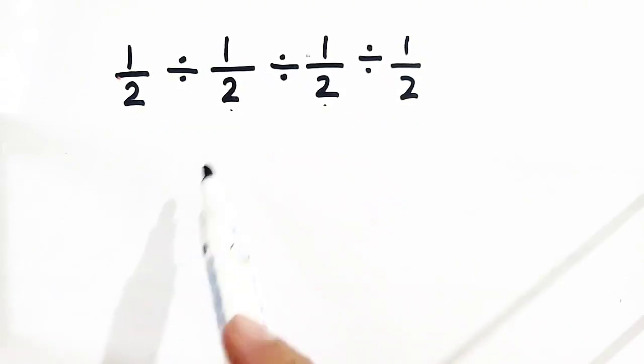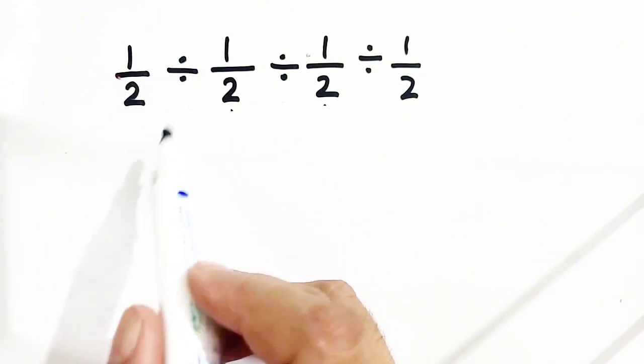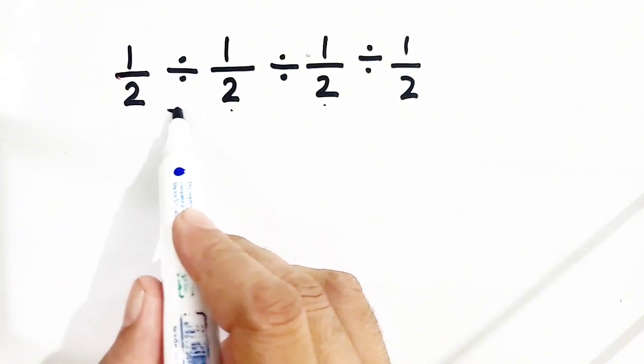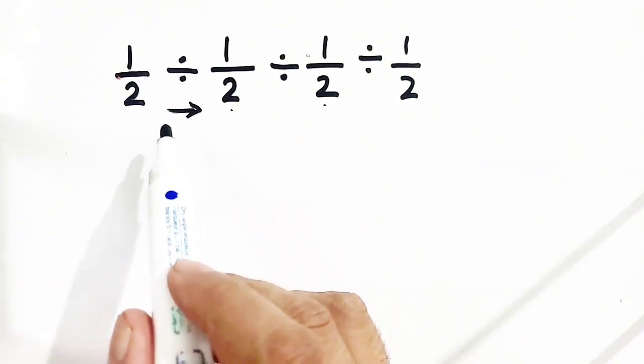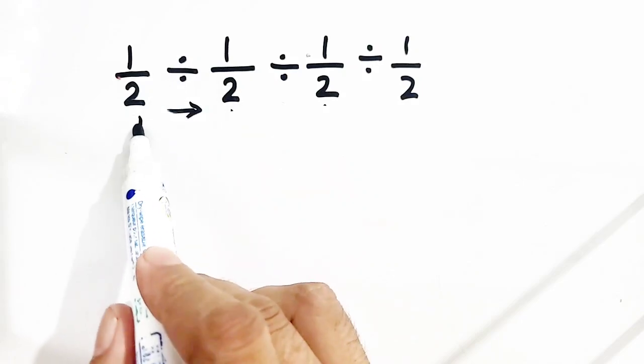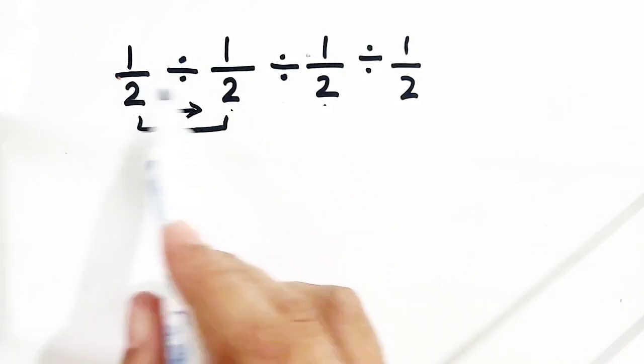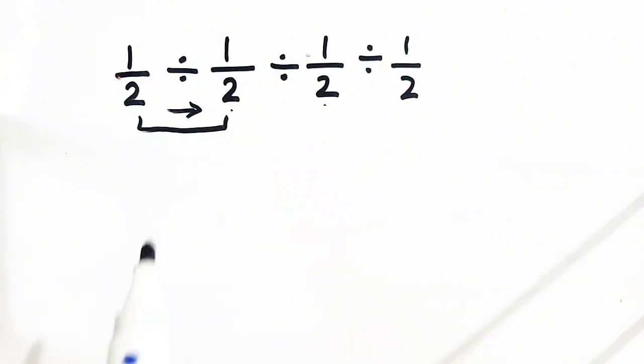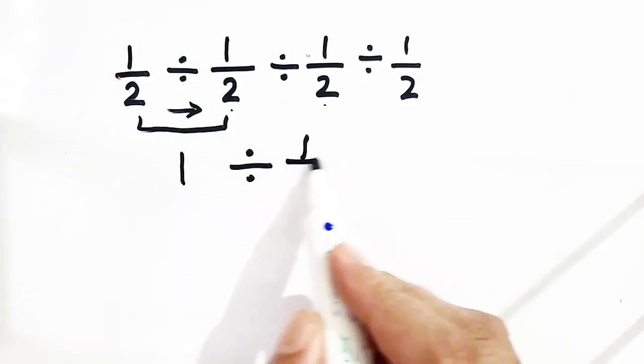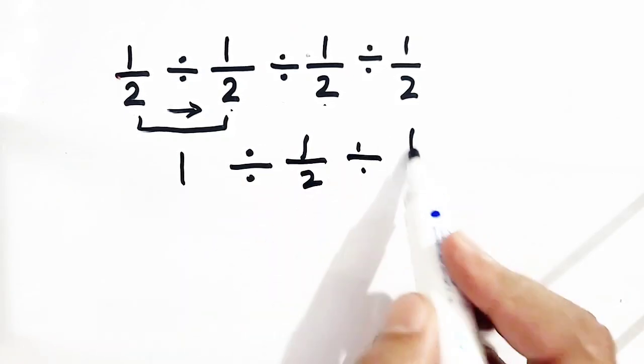Now, the correct way to solve this question is we have to move from left to right. First, we have to solve this one, which have to be in between two numbers. So, it's where simple half divided by half is equal to 1 divided by half divided by half.